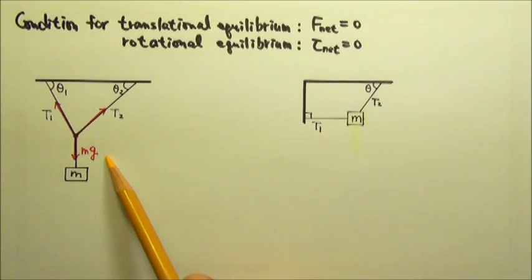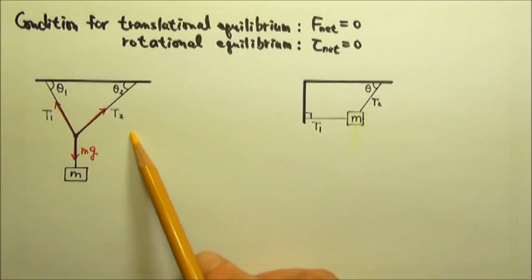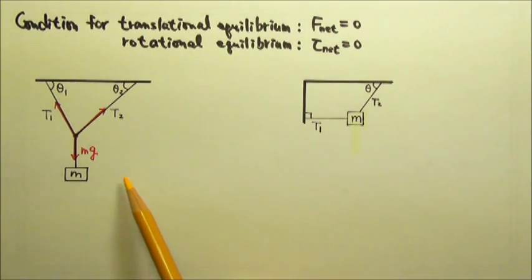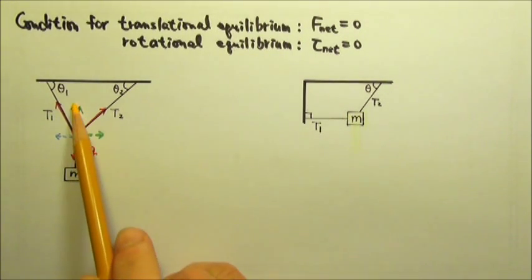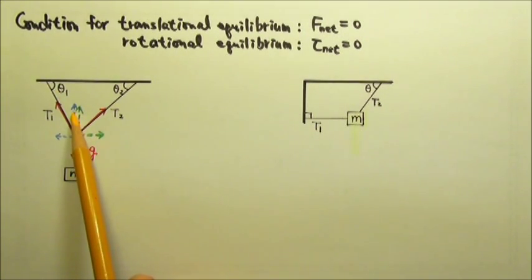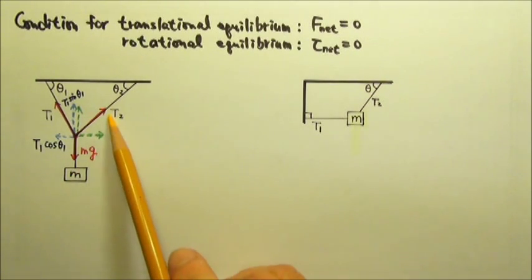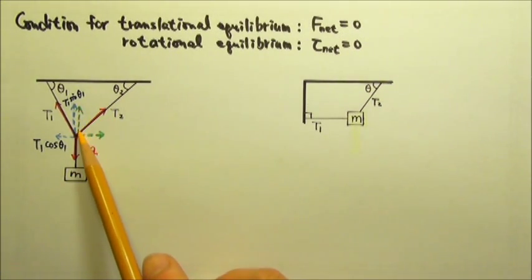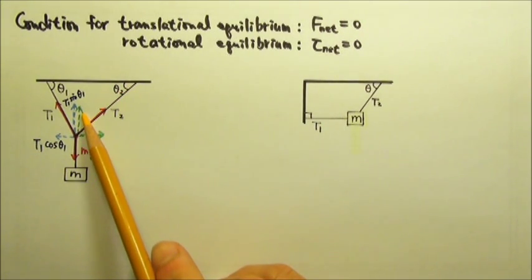This is a two-dimensional situation, so we have to look at one direction at a time. It's convenient to use horizontal and vertical for the two directions. That means T1 and T2 are slanted. The upward component for T1 is opposite to the angle, so the upward component is T1 times sine theta, and the horizontal component must be T1 times cosine theta. Similarly, the upward component for T2 is opposite to the angle, so that's T2 times sine theta 2.